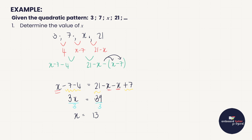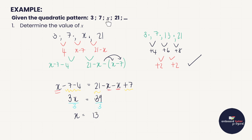Let's verify: the pattern becomes 3, 7, 13, 21. The first differences are 4, 6, 8, and the second differences are 2 and 2 — a constant second difference. This confirms it is a quadratic number pattern with x = 13. When a question says 'quadratic,' always work down to the second difference and set them equal.